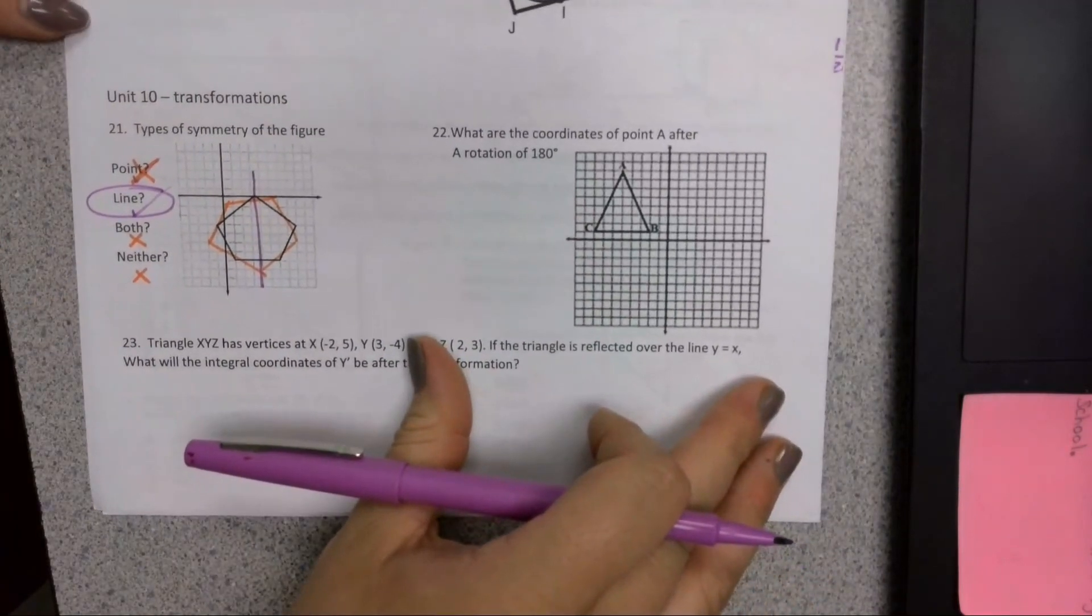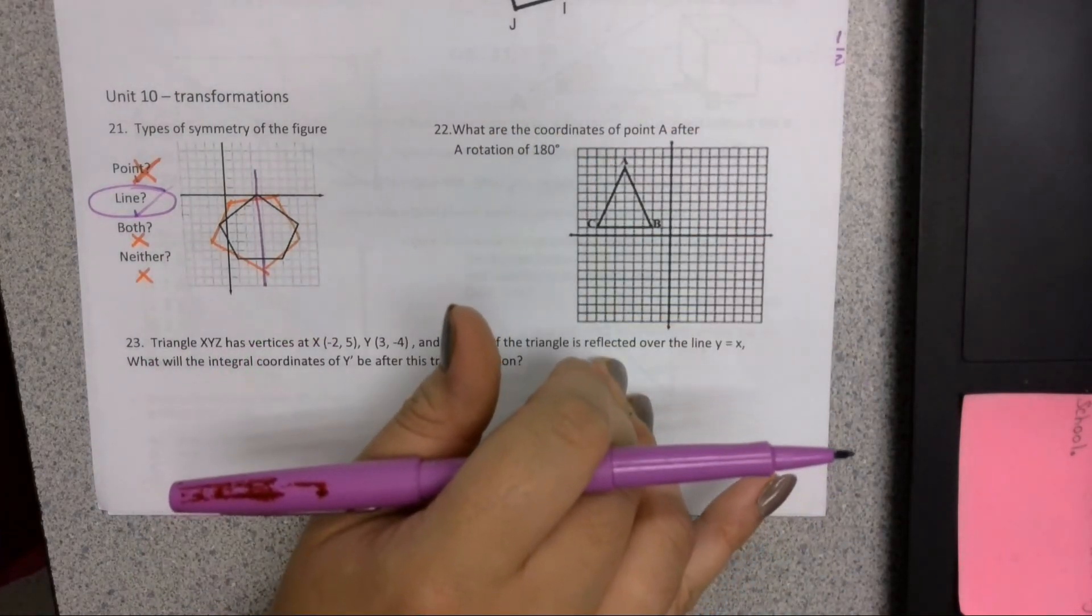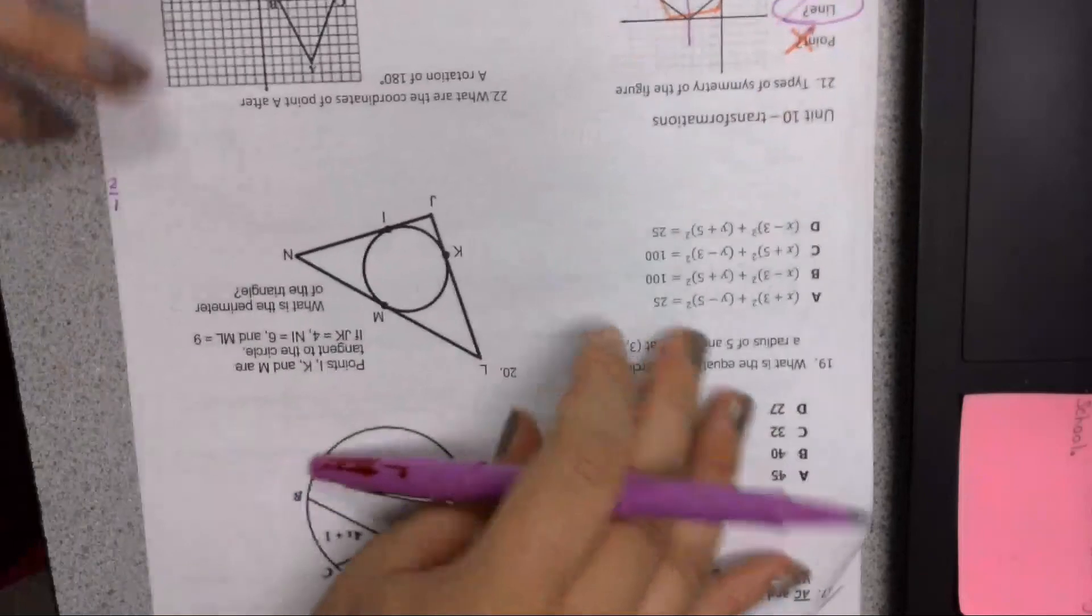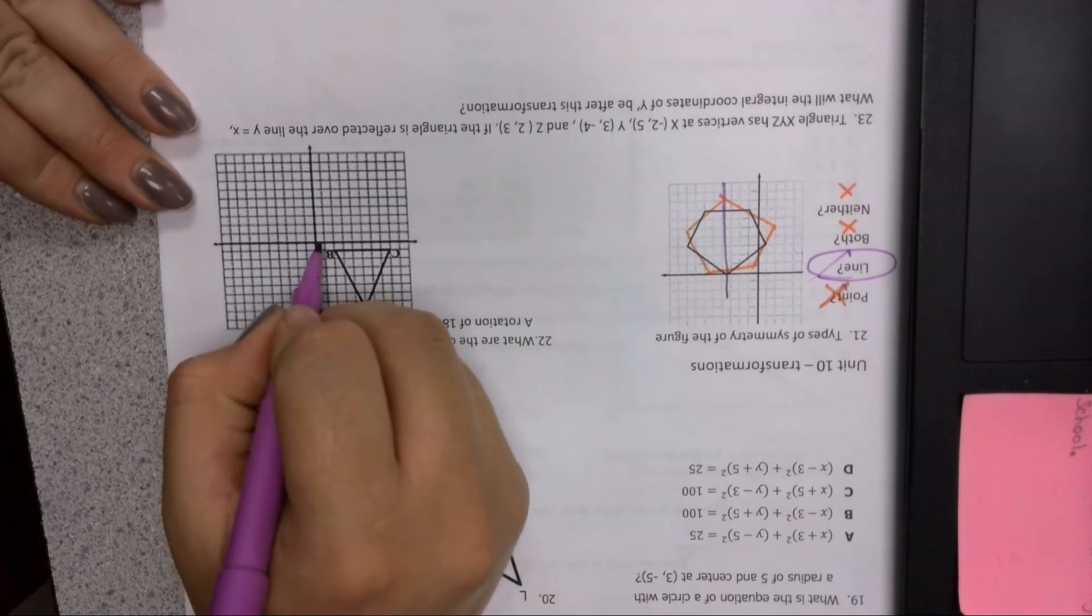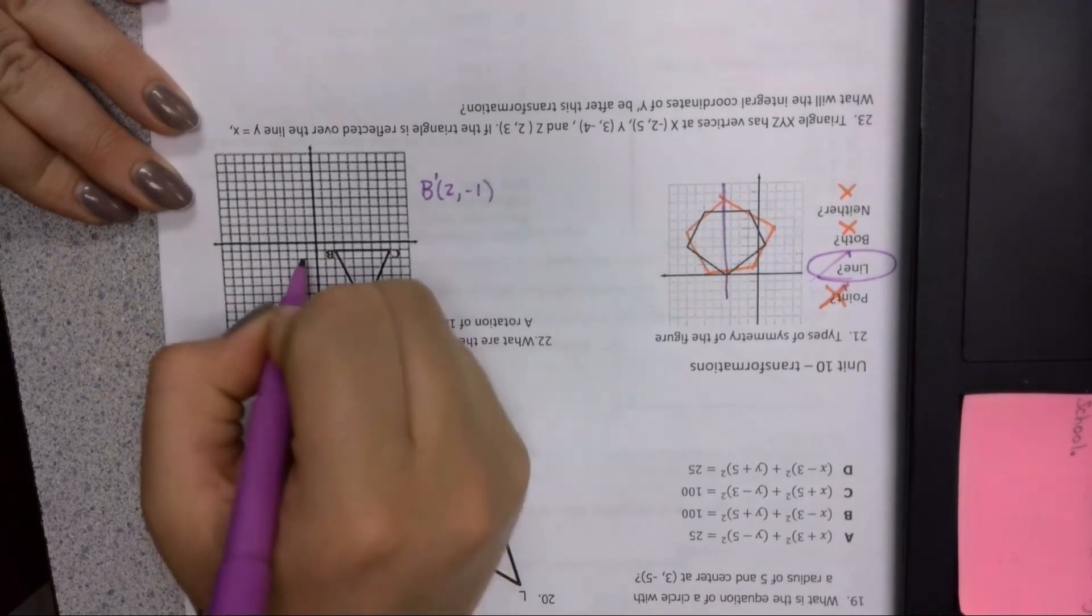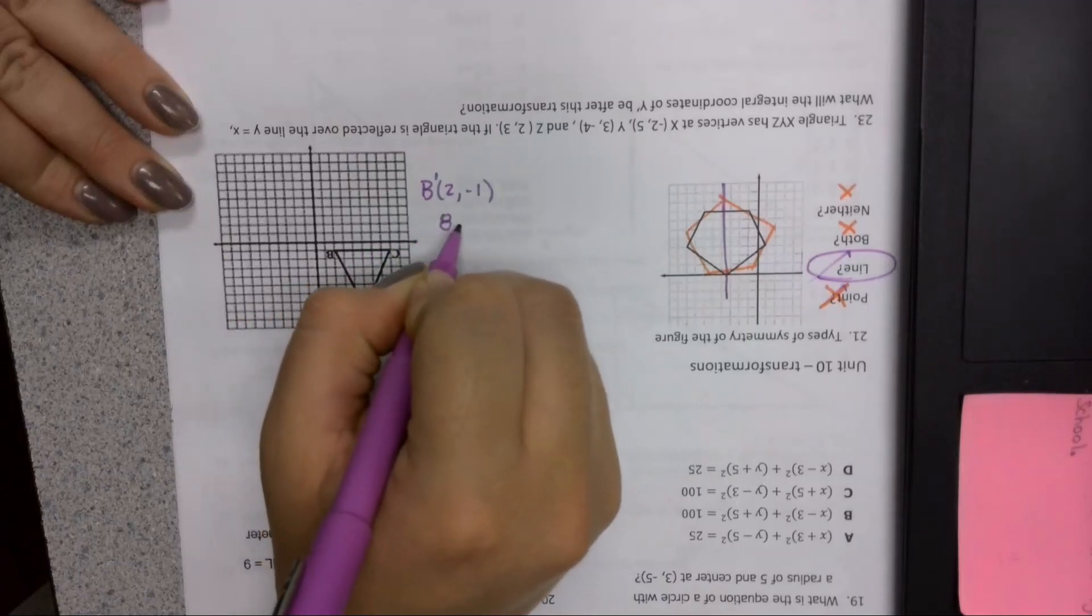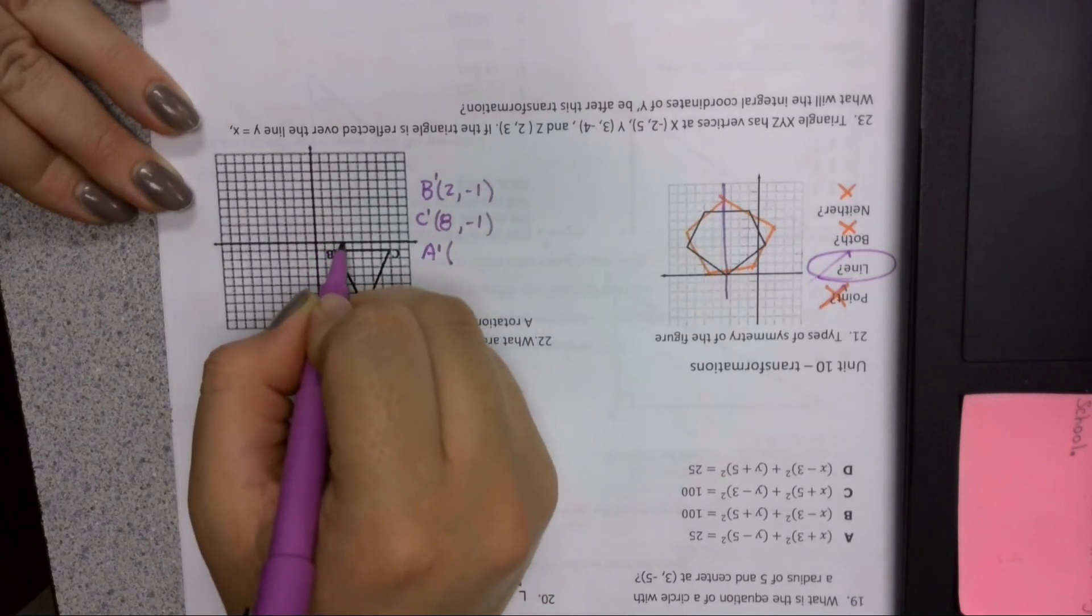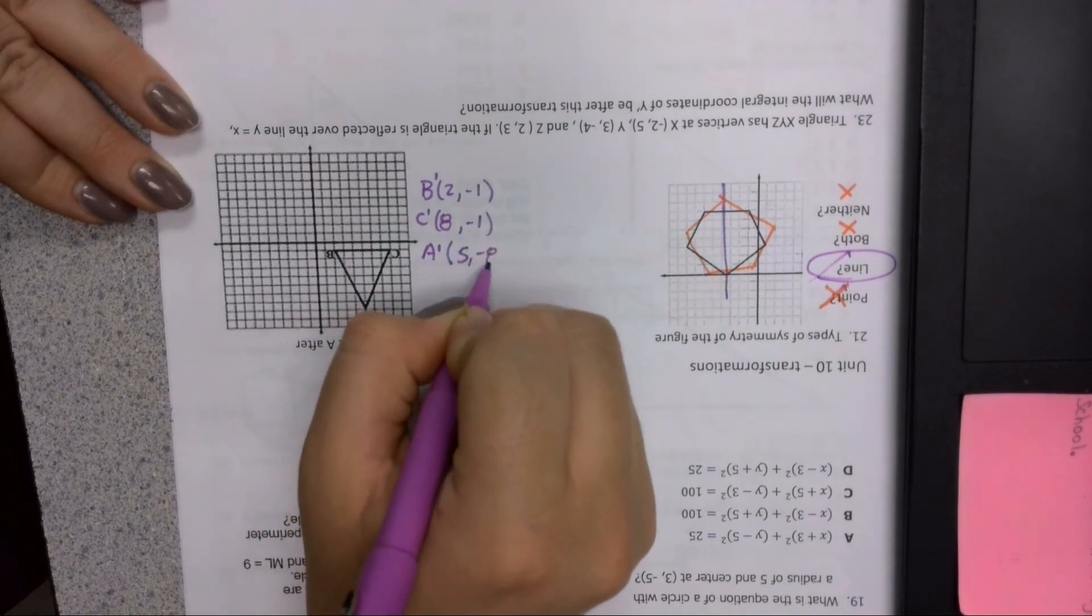If we're going to rotate something 180 degrees, we're going to rotate it so that it's all the way upside down. The easiest way to do this is to take my paper and rotate it 180 degrees so that it is now upside down, and then read it like it's a normal graph. So my B prime comes to 2, negative 1. My C prime is now at 8, negative 1. And my A prime is now at 5, negative 8.